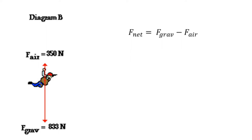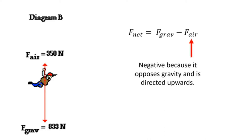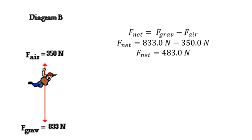We write: net force equals the force of gravity minus the air resistance force. Take note that since we are in free fall motion, all downward forces are given a positive sign, while the air resistance force is given a negative sign because it opposes gravity and is directed upwards. Solving for net force, we get 483 newtons by deducting 350 newtons of air resistance from our 833 newton gravity force.